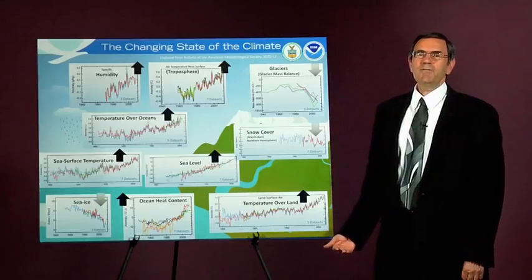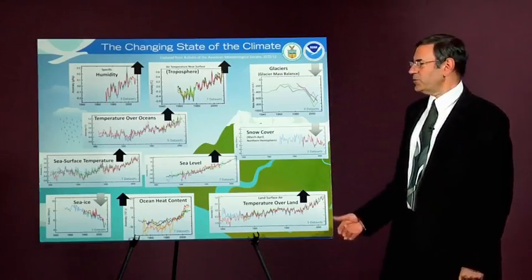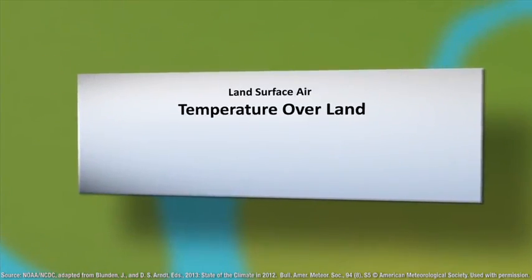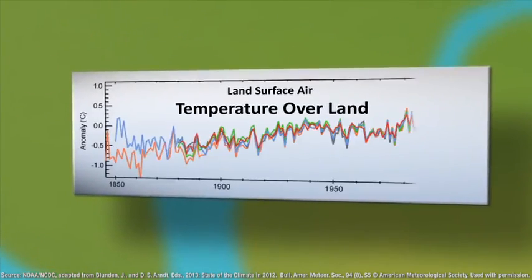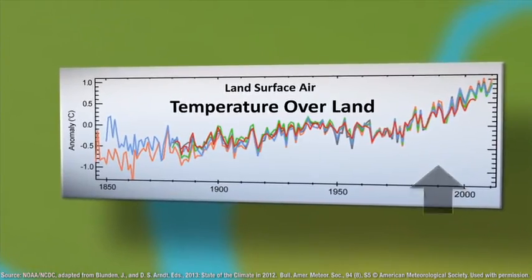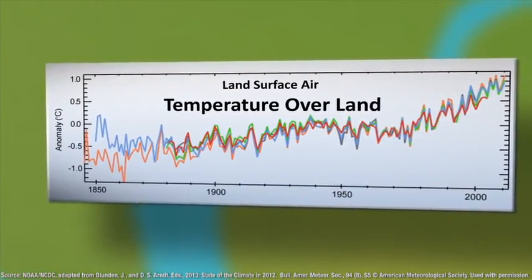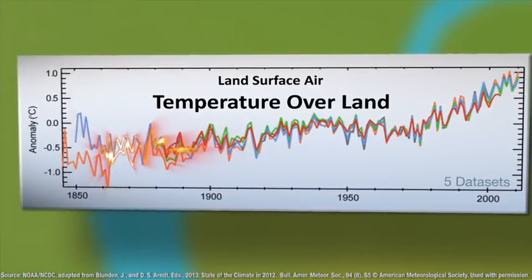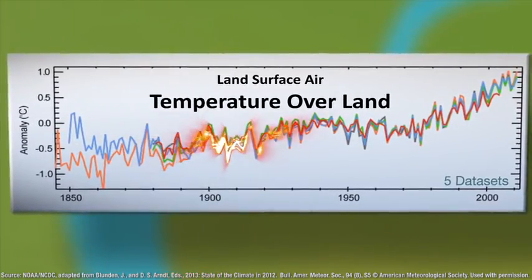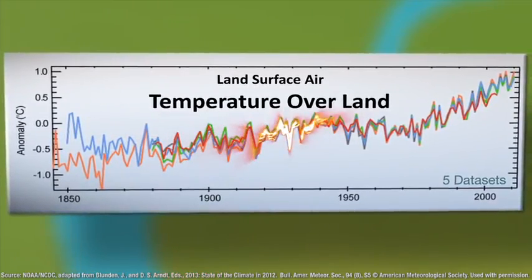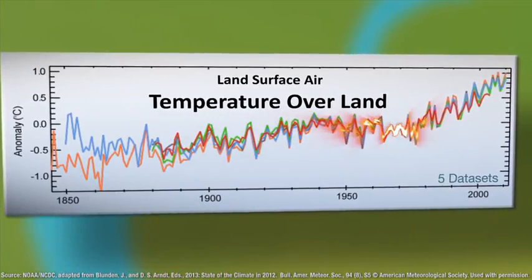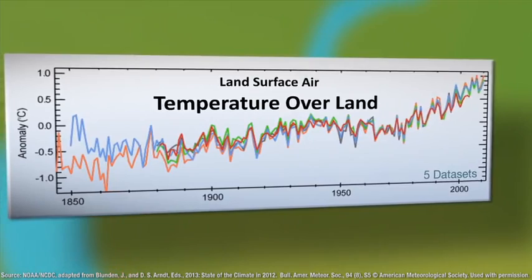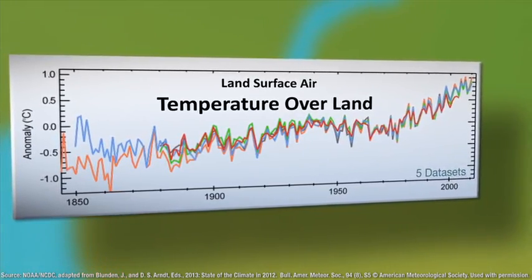We have a number of different ways in which we measure temperature. Probably the most common is the land surface over the globe — land surface air temperatures. You can see a general rise in temperature, especially over the last several decades. The different colored lines represent different analysis teams analyzing the data. These data go back to 1880 and come up right through the present time.